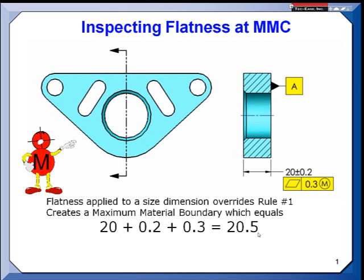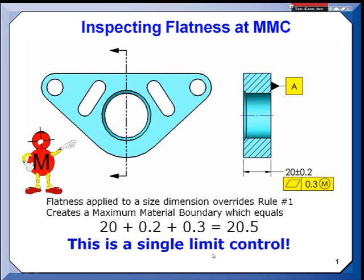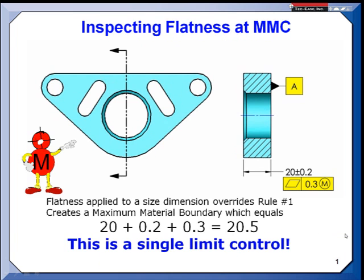So we just overrode rule one. We don't have to fit through that slot at 20.2 anymore — we have a new slot that's at 20.5. This becomes a single limit control. In other words, the only thing you have to do to check this flatness is make sure you don't violate that 20.5 envelope.